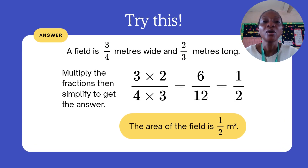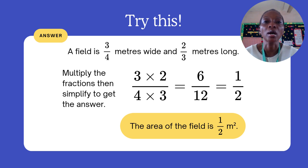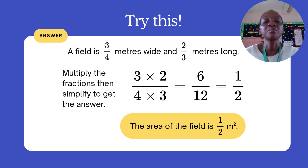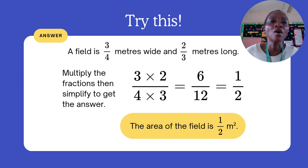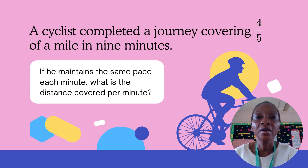A field is three over four meters wide and two over three meters long. You multiply the fractions then simplify to get the answer. That is three times two all over four times three. Three times two gives six and four times three gives twelve. The numbers can still be converted to the lowest term — six divided by six gives one, and twelve divided by six gives two, since they are both divisible by six. So the answer is one over two, not six over twelve. The area of the field is one over two meter square.